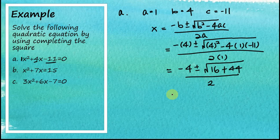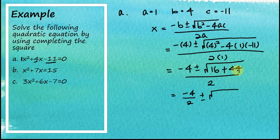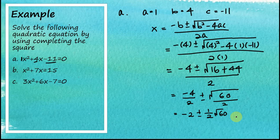We can split this as negative 4 over 2, plus or minus the square root of 16 + 44, which is 60, divided by 2. This simplifies to negative 2 plus or minus one-half times the square root of 60. This is the solution for the first quadratic equation.